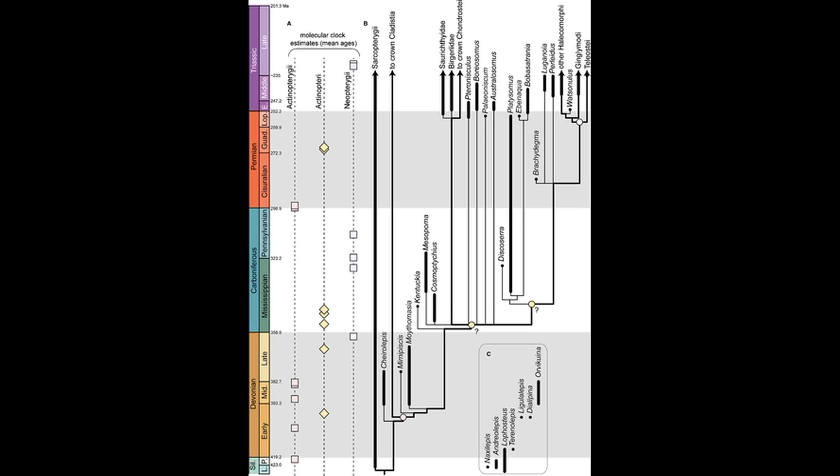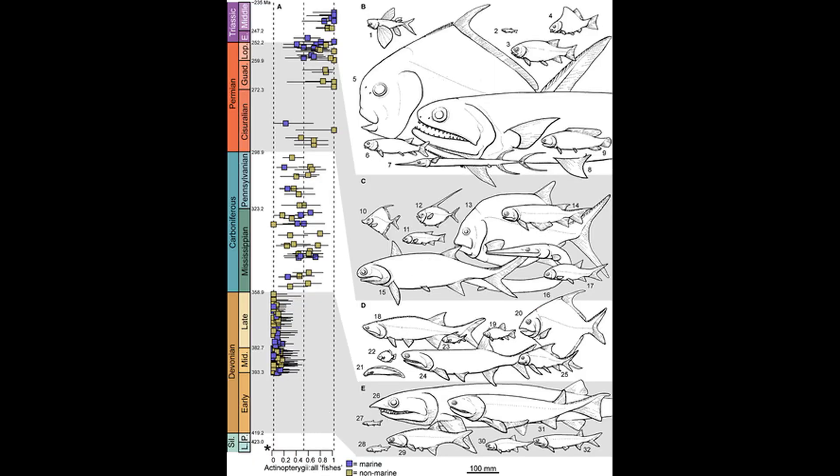Regardless, ray-finned fish had relatively low diversity until the end-Permian extinction, and they underwent a major radiation in the Triassic. The start of the Triassic is when the first fossils of each of the four Actinopterygian lineages appear, though most molecular dates point to an earlier divergence: the bichirs and reedfish lineage split off in the Devonian, the paddlefish-sturgeon split in the Carboniferous, and the last two lineages — the gars and bowfins and teleosts — diverged in the Permian. In the Triassic, these fish had diverse ecologies from the start.